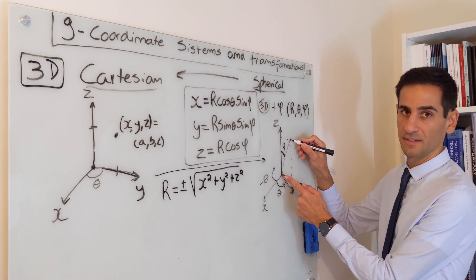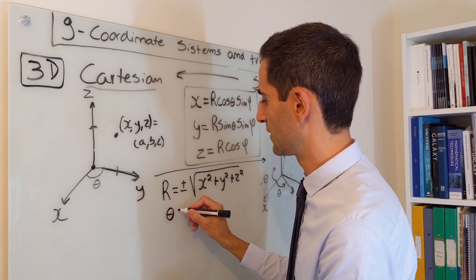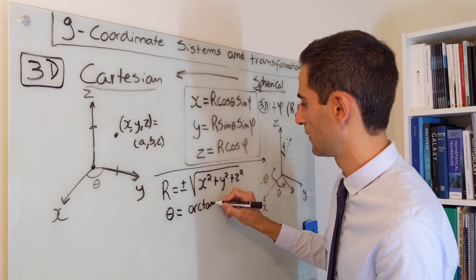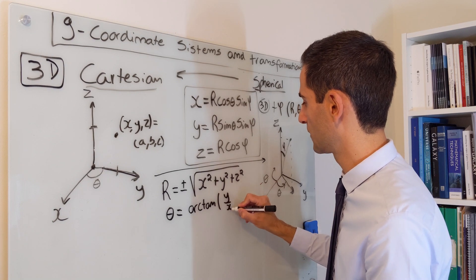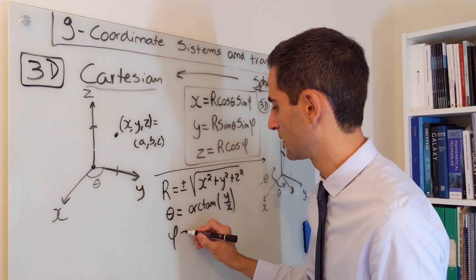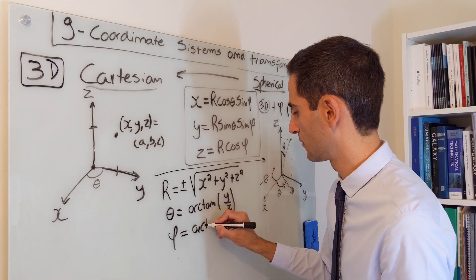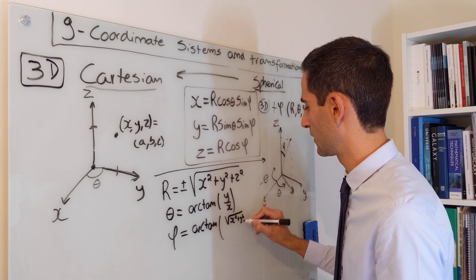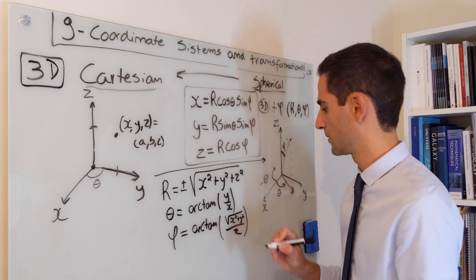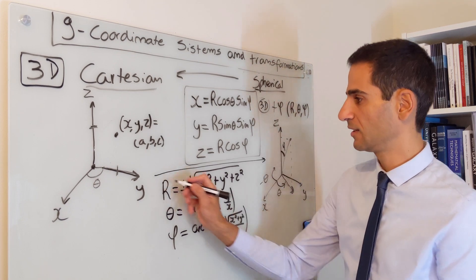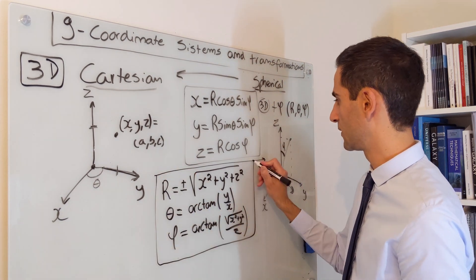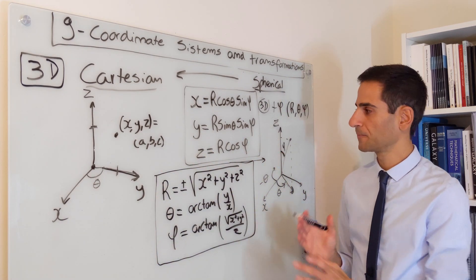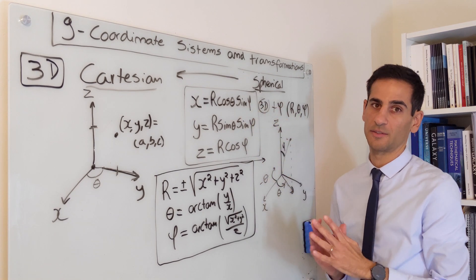Theta, because it has been defined in the same way, is still arctan of y over x. And phi is given as the arctan of square root of x squared plus y squared over z. These are the coordinate transformations that you need when you want to go from Cartesian to spherical or polar 3D.